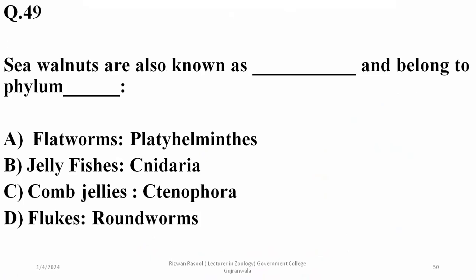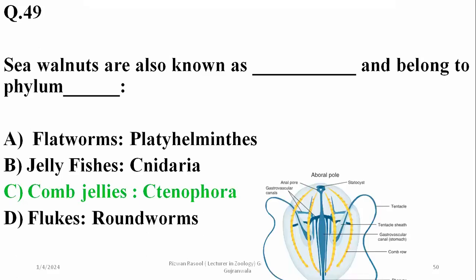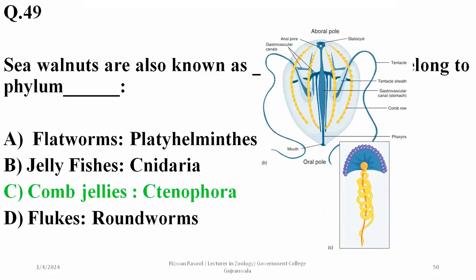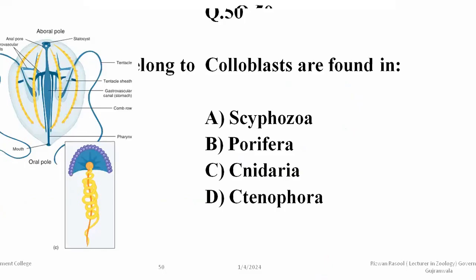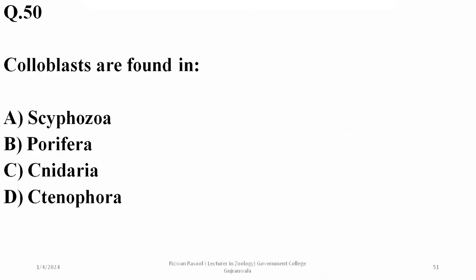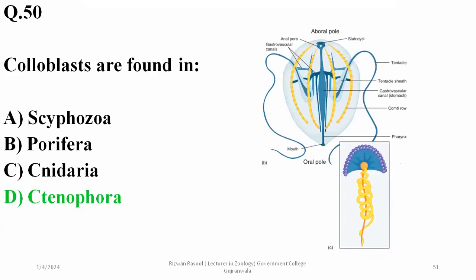Comb jellies also known as sea walnuts belong to phylum Ctenophora. Colloblasts are the characteristic cells found in the same phylum — colloblasts are shown in the diagram. Thank you so much; I hope this helps in a quick review of the topics covered.